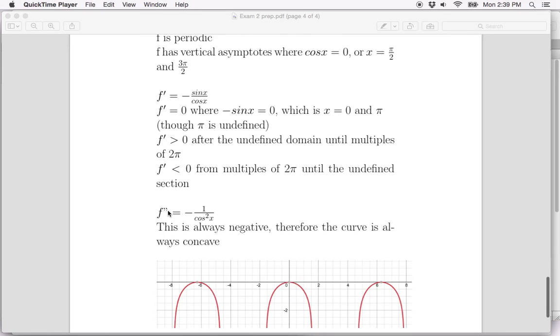When we take the second derivative, you can do the same process. If you do the quotient rule, you end up with a negative and then quantity sin² + cos², which equals 1, and then you have the denominator squared. We end up with f'' = -1/cos²x. What that shows us is this is always negative, so the curve is always concave.